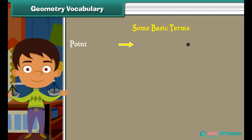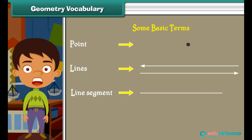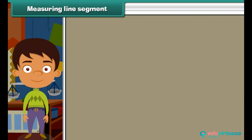Geometry vocabulary. Let us know about some basic terms used in geometry. Point: it is an imaginary dot. Lines: all these are straight lines. Line segment: part of a line is called a line segment. Here, AB is a line segment. These are curved lines.